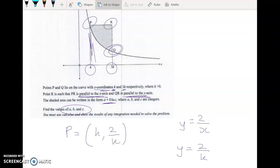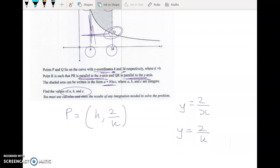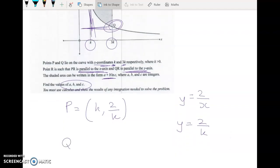So P has x-coordinate of k and y-coordinate of 2 over k. And Q has x-coordinate of 3k and it has a y-coordinate of 2 over 3k.